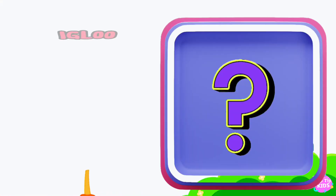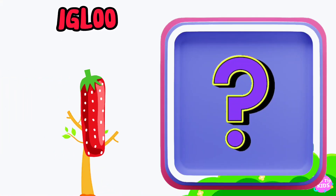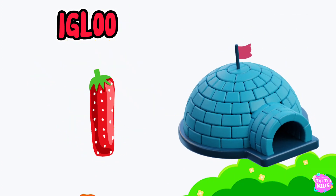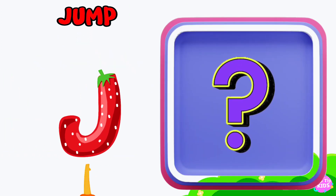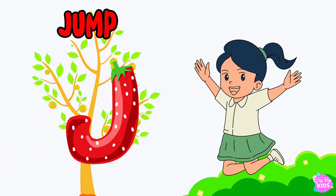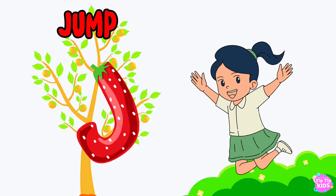I is for igloo, i-i-igloo. J is for jump, j-j-jump.